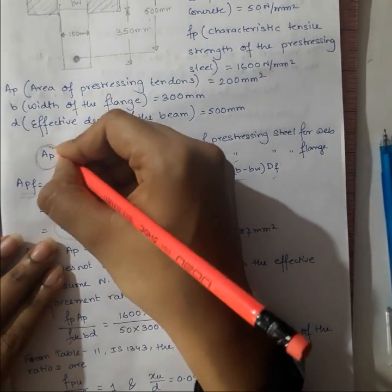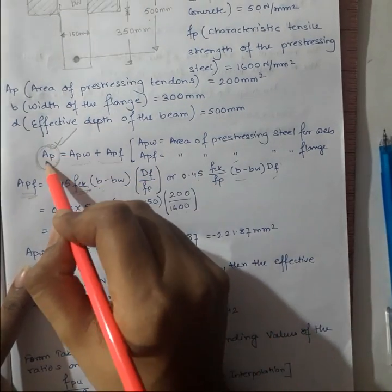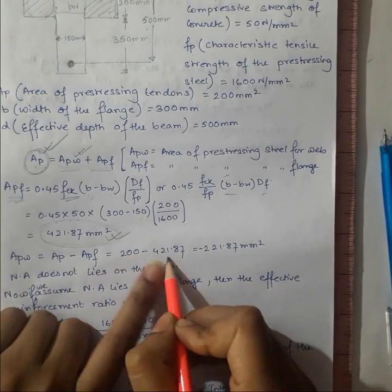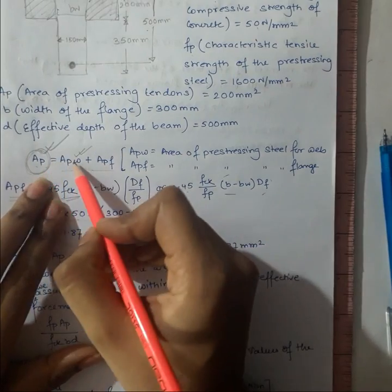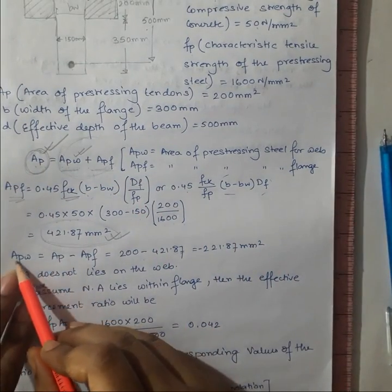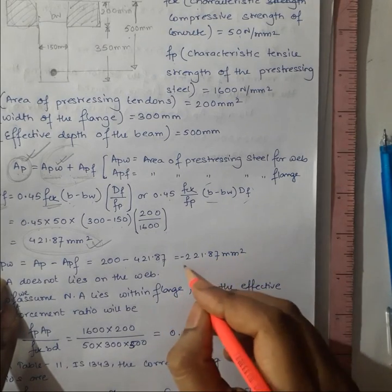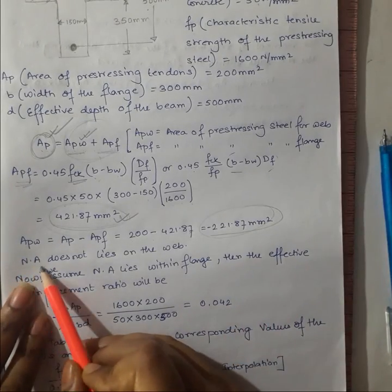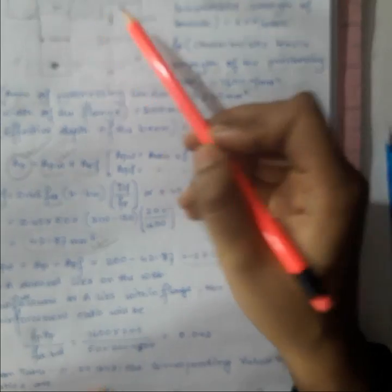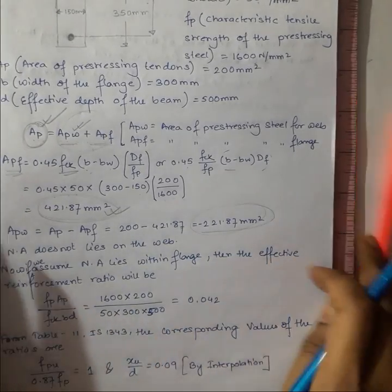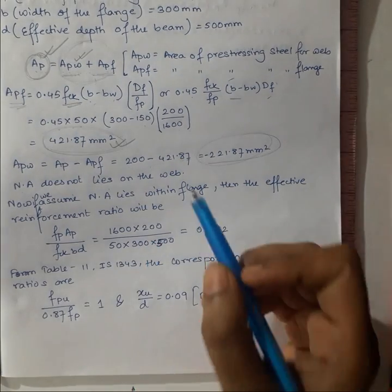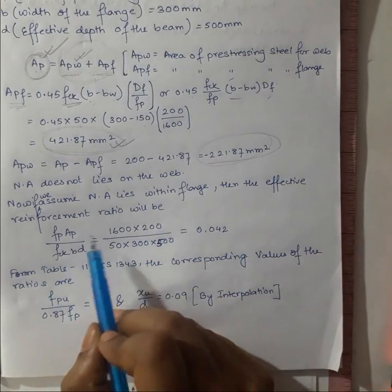Knowing Apf, we can find Apw = Ap − Apf = 200 − 421.87 = −221.87 mm². Since Apw is negative, this clearly implies that the neutral axis does not lie in the web — it definitely lies within the flange portion. Therefore we calculate this section the same way as a rectangular section.